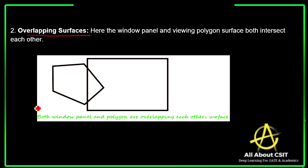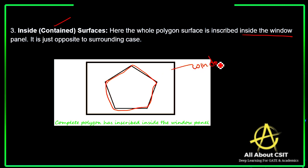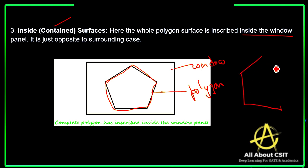Another case is overlapping surfaces: here the window panel and the viewing polygon surface both intersect each other. Next is the inside surface, also called the contained surface — the whole polygon surface is inscribed inside the window panel. This is opposite to the surrounding case, where the polygon was completely outside and the window panel was inside; here, the window panel is outside and the polygon is inside.